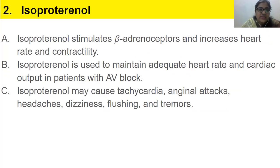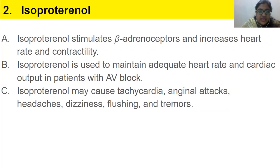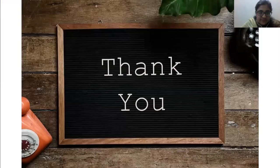The second drug is isoproterenol. It stimulates beta adrenoreceptors and increases heart rate and contractility. It is used to maintain adequate heart rate and cardiac output in patients with AV block. Its adverse effects may include tachycardia, angina, heart attacks, dizziness, flushing, and tremors.